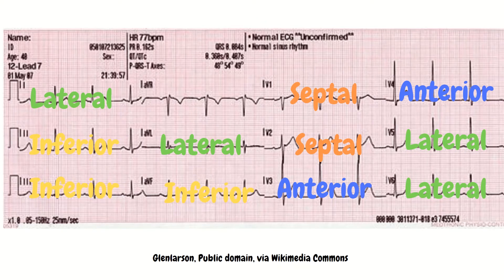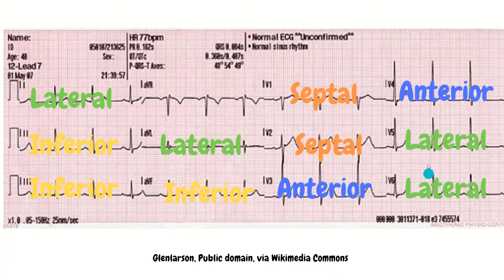Here is a visual on an ECG showing the consecutive leads. In yellow we have leads II, III, and AVF — they look at the inferior part of the heart. In orange, V1 and V2 are looking at the septum. In blue, V3 and V4 are looking anteriorly. In green, leads V5, V6, lead I, and AVL are looking at the lateral part of the heart. When we say consecutive leads, these grouped leads within each color are what we mean.